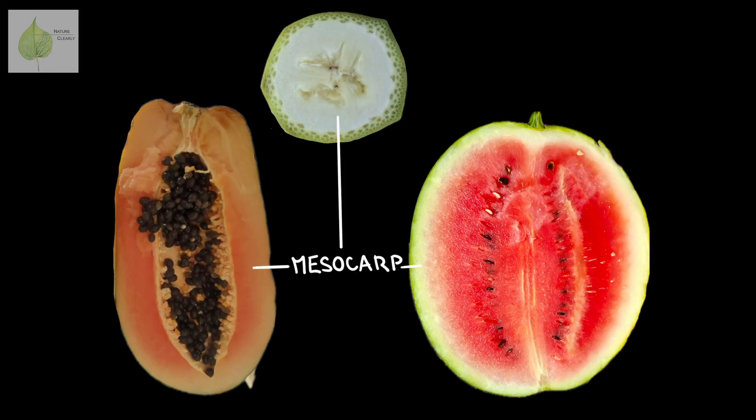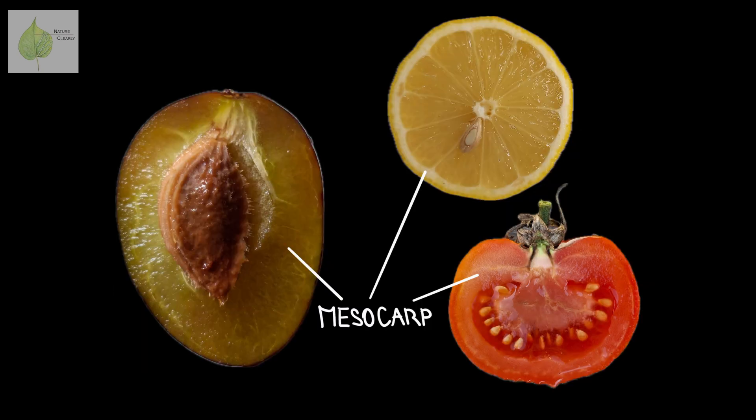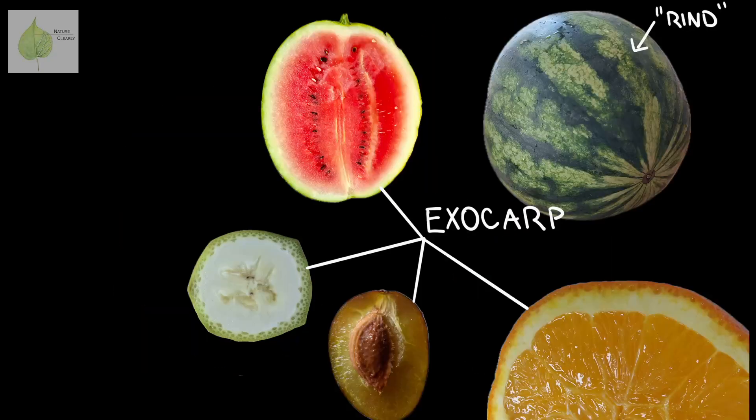The next pericarp layer is the mesocarp, which often makes up the most volume of the pericarp, but again it looks different in different fruits. The exocarp or epicarp is the outermost layer of the fruit — the part we simply call a rind. But not always.